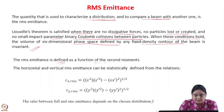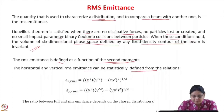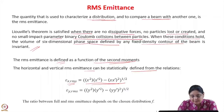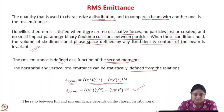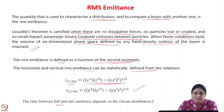RMS emittance is defined as a function of the second moments of the distribution. The horizontal and vertical RMS emittance can be statistically defined from these relations. The RMS emittance in the x direction is defined in terms of the second moment: we have x-squared average multiplied by x-prime-squared average minus the square of the x x-prime average, and then we take the square root. The RMS emittance is the area of the ellipse containing all the particles.